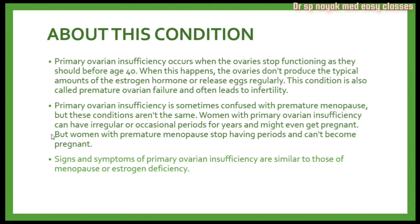Primary ovarian insufficiency occurs when the ovaries stop functioning as they should before age 40. The ovaries don't produce typical amounts of estrogen or release eggs regularly. This condition is also called premature ovarian failure and often leads to infertility. It is sometimes confused with premature menopause, but these conditions are not the same. Women with primary ovarian insufficiency can have irregular or occasional periods for years and might even get pregnant, whereas women with premature menopause stop having periods entirely. Signs and symptoms include hot flashes, night sweats, and vaginal dryness, similar to menopause or estrogen deficiency.